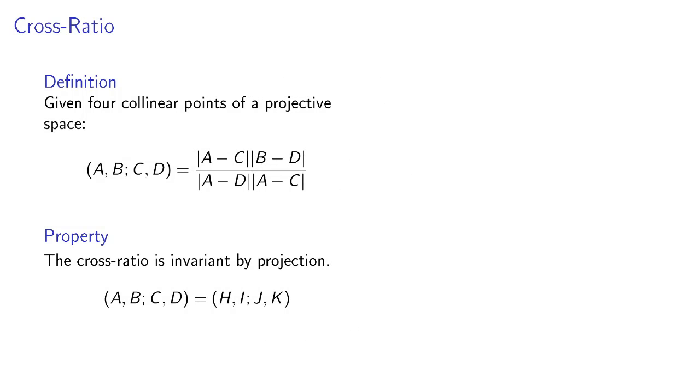The Hilbert metric is defined using the cross-ratio. Given four collinear points of a projective space, the cross-ratio is defined as a ratio of distances between the four points.